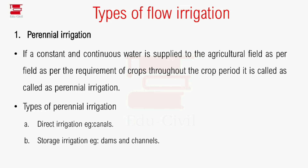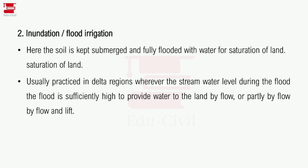Perennial irrigation supplies water continuously throughout the crop period as per the requirement of the crop — that means directly from storage. Inundation or flood irrigation is where the soil is kept submerged and fully flooded with water until saturation. It is usually practiced in delta regions.